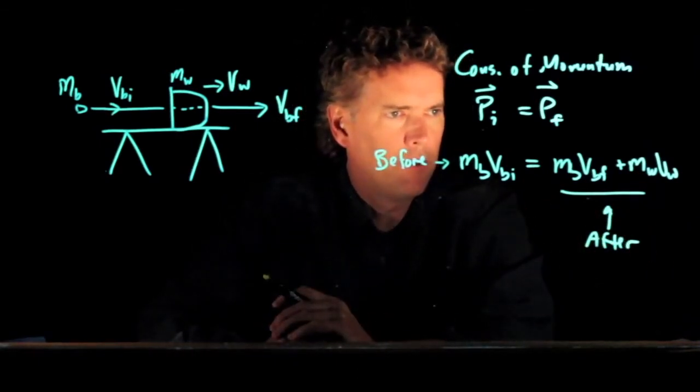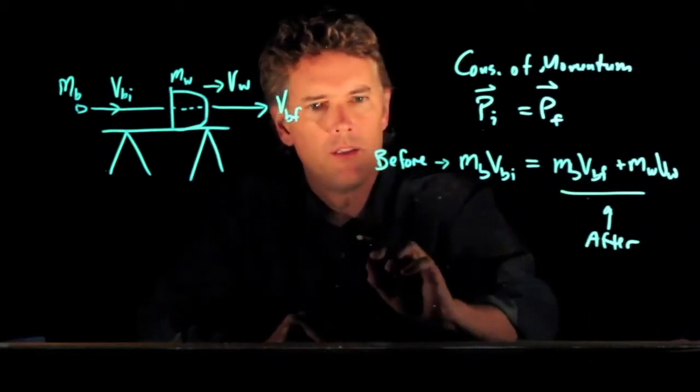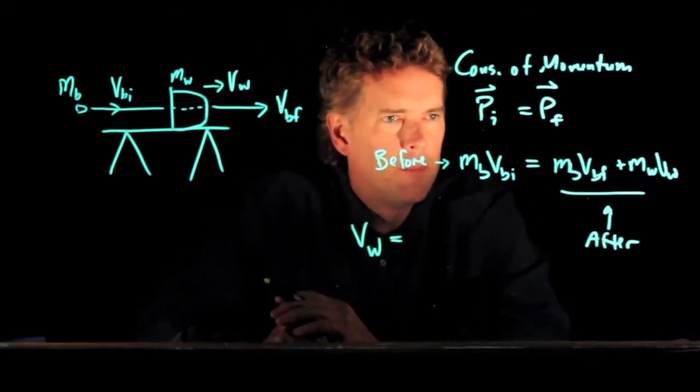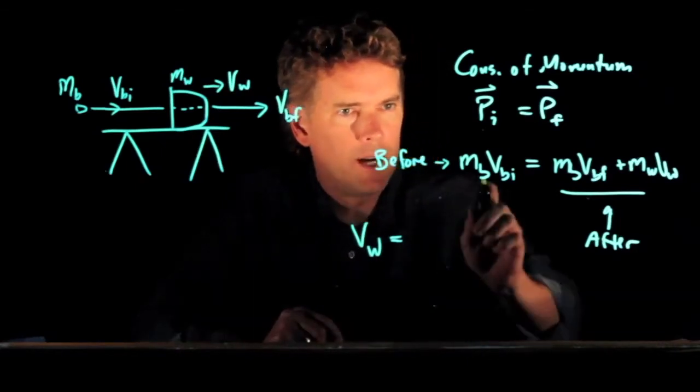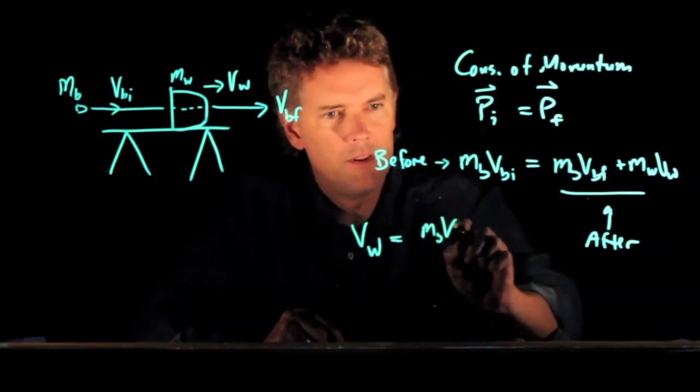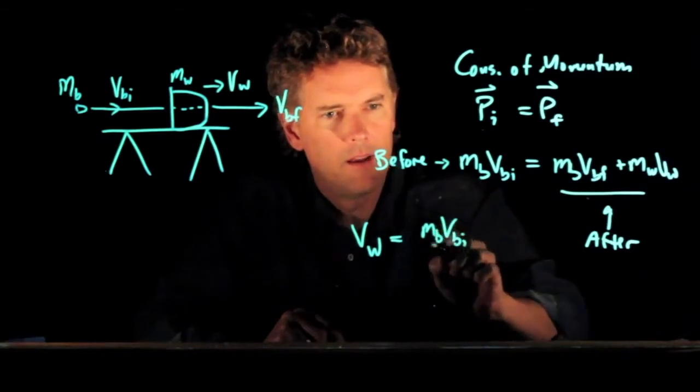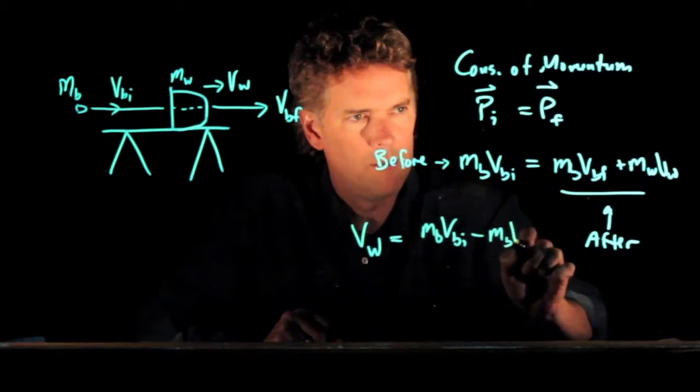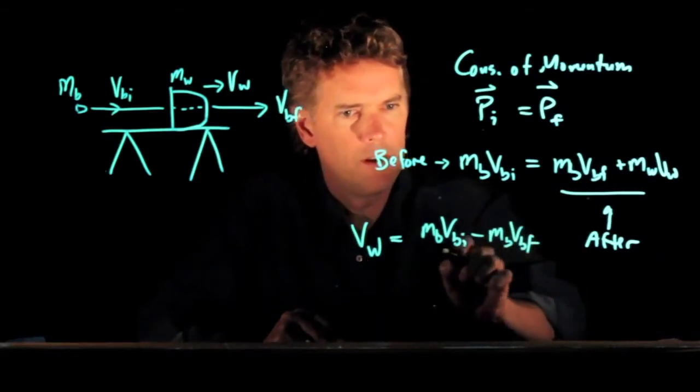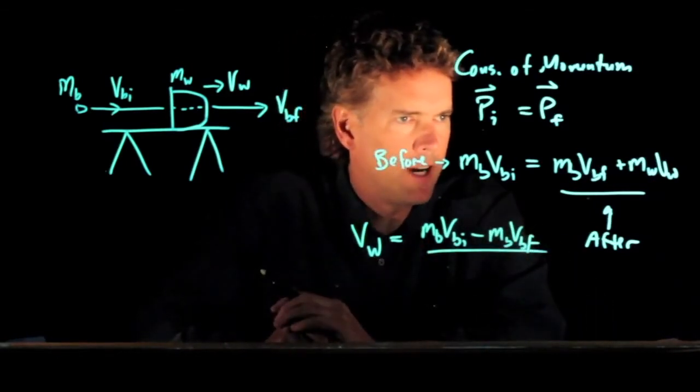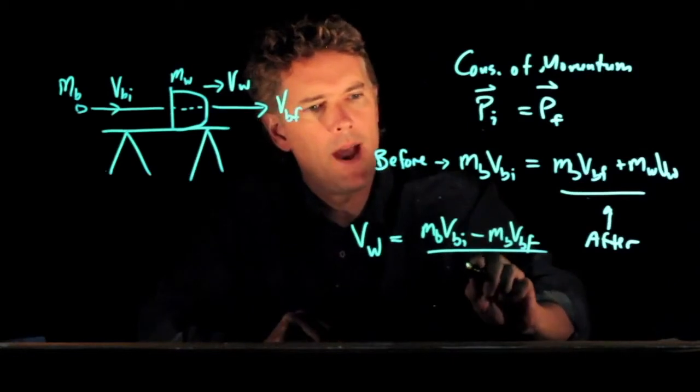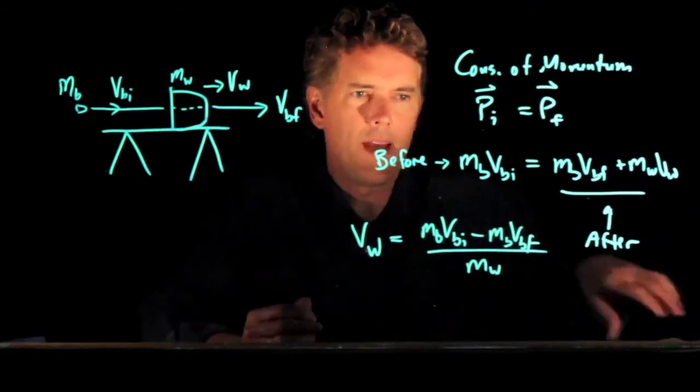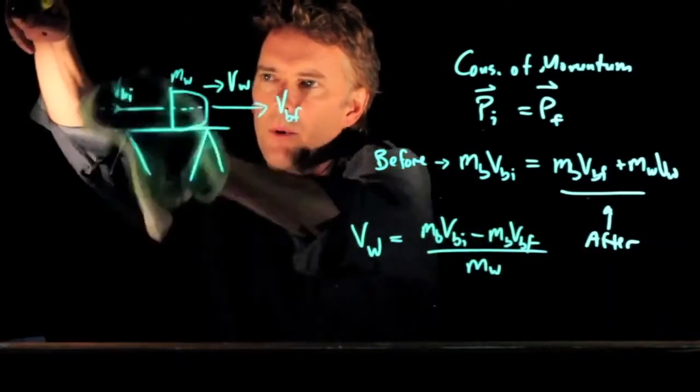And if we have all those numbers, we can solve this for the speed of the wooden block. Vw is going to be what? Well I have mbvbi. I need to subtract this thing, mbvbf. And I need to divide by the mass of the wooden block. And now let's try that with some numbers and see how it works out.